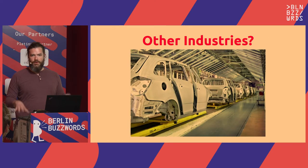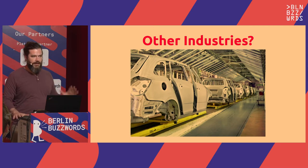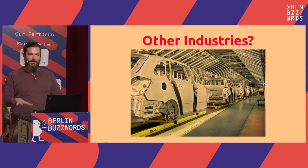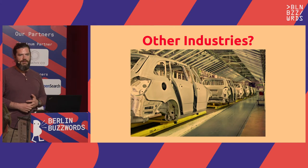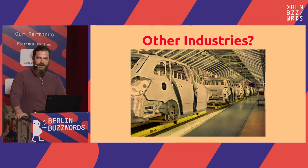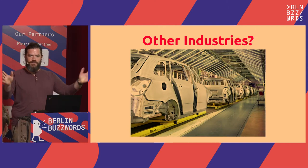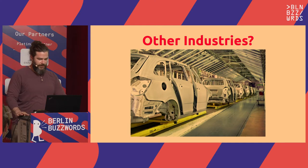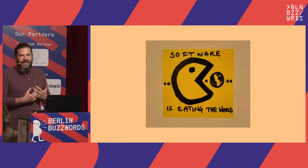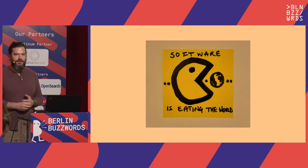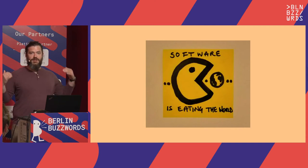One thing that's really instructive when thinking about quality is to compare to other industries. In the automobile industry — what do you think it takes for a typical new model car to go from conception to the showroom floor? It's about five to six years. So what if your CEO came to you and asked you to ship a new software feature, and you told them it'll take five to six years? You'd be laughed out of the room. Because that's not the expectation in software — things are just easier for us. We don't have to deal with the physical logistics of real production.